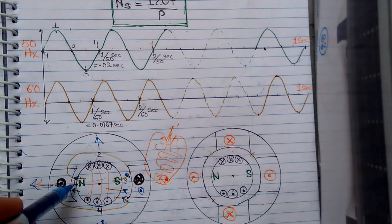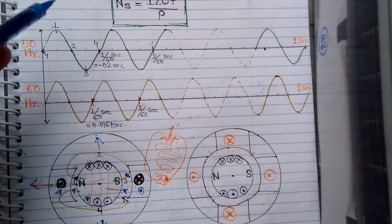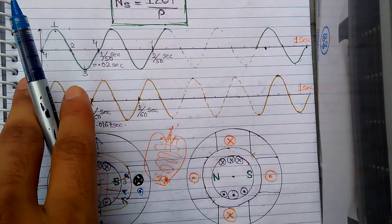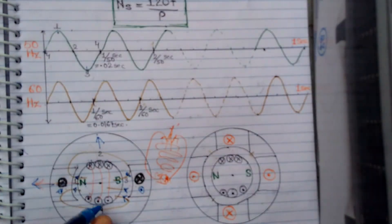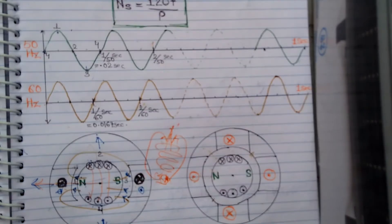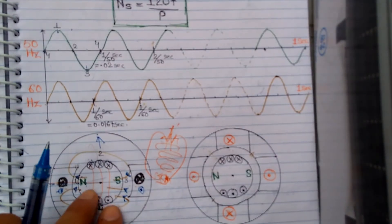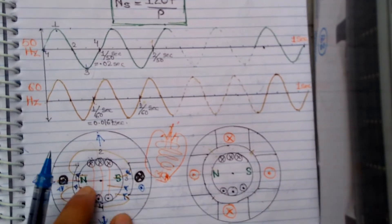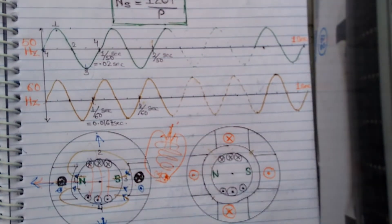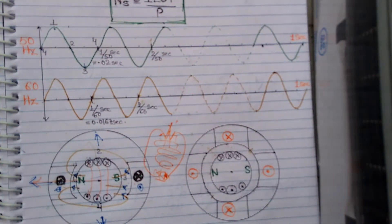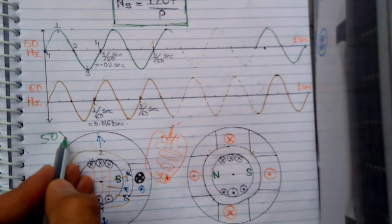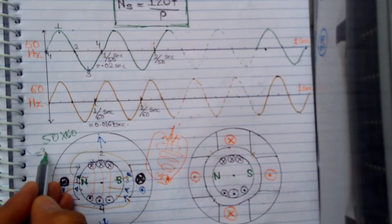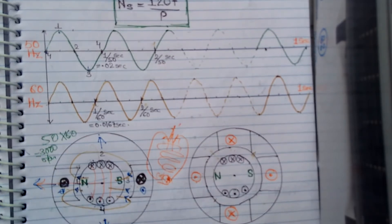In one complete rotation I am completing one electrical cycle. In one second I have 50 such cycles, so to consume these 50 cycles in one second I have to rotate this rotor 50 times. That means my rotor speed is 50 rotations per second. To find the speed in RPM, 50 × 60 = 3000 RPM.